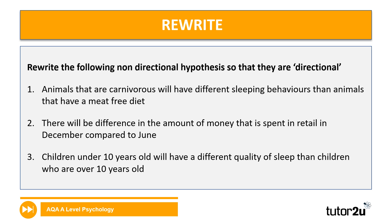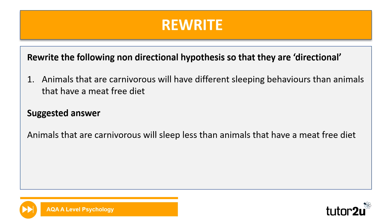Next we're going to do a bit of practice in terms of rewriting. You've got three non-directional hypotheses, and your job is to change them into directional hypotheses. These are also in your booklet next to question four with space underneath to rewrite them. The first one: animals that are carnivorous will have different sleeping behaviours than animals that have a meat free diet. The directional version might be: animals that are carnivorous will sleep less than animals that have a meat free diet — clearly specifying the direction in terms of the sleep pattern.